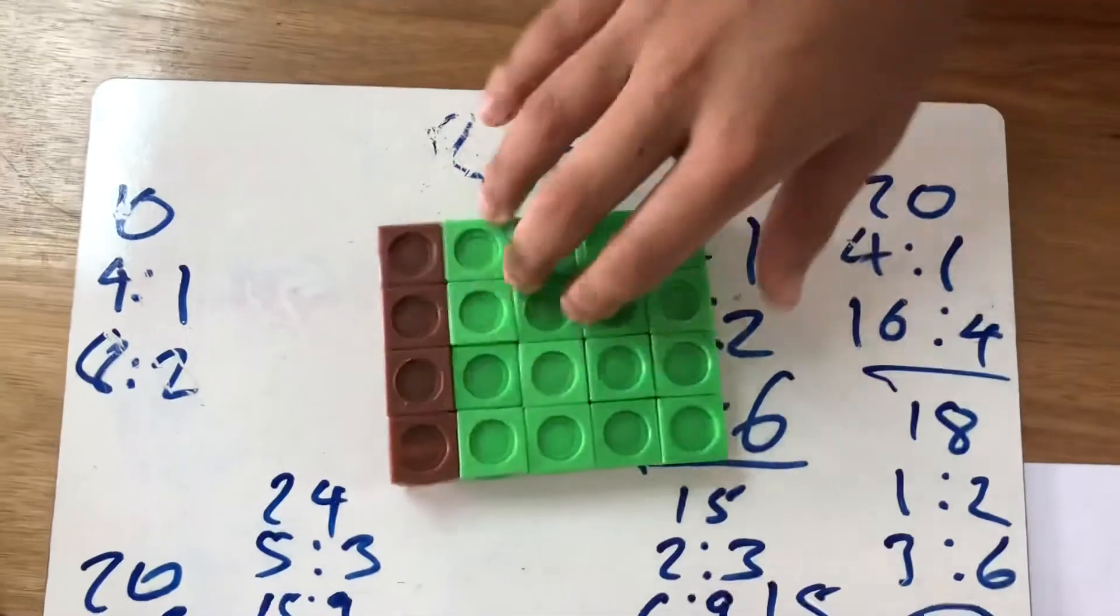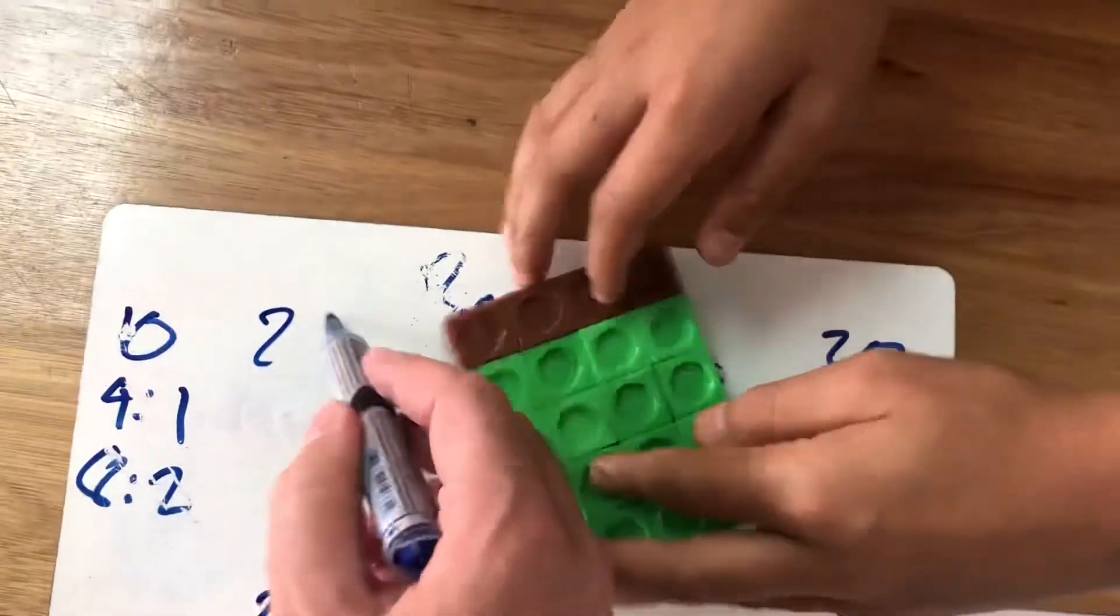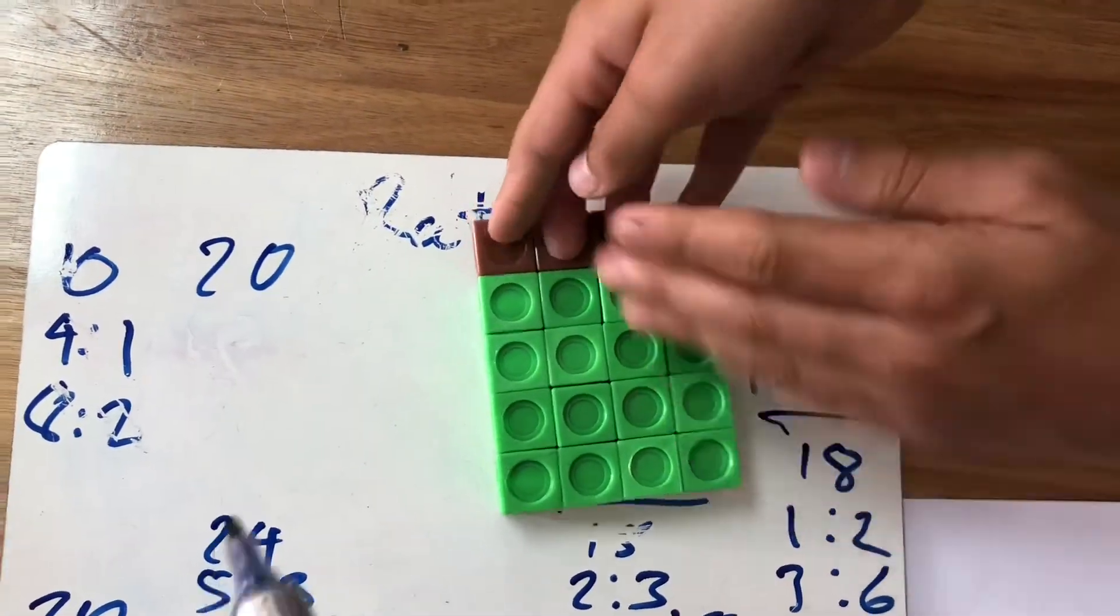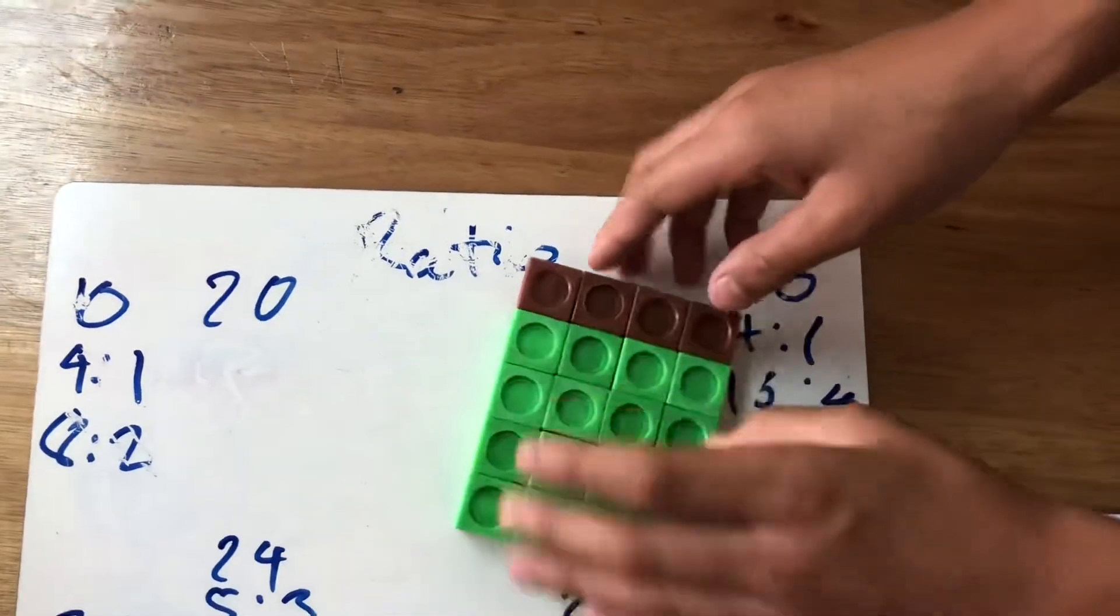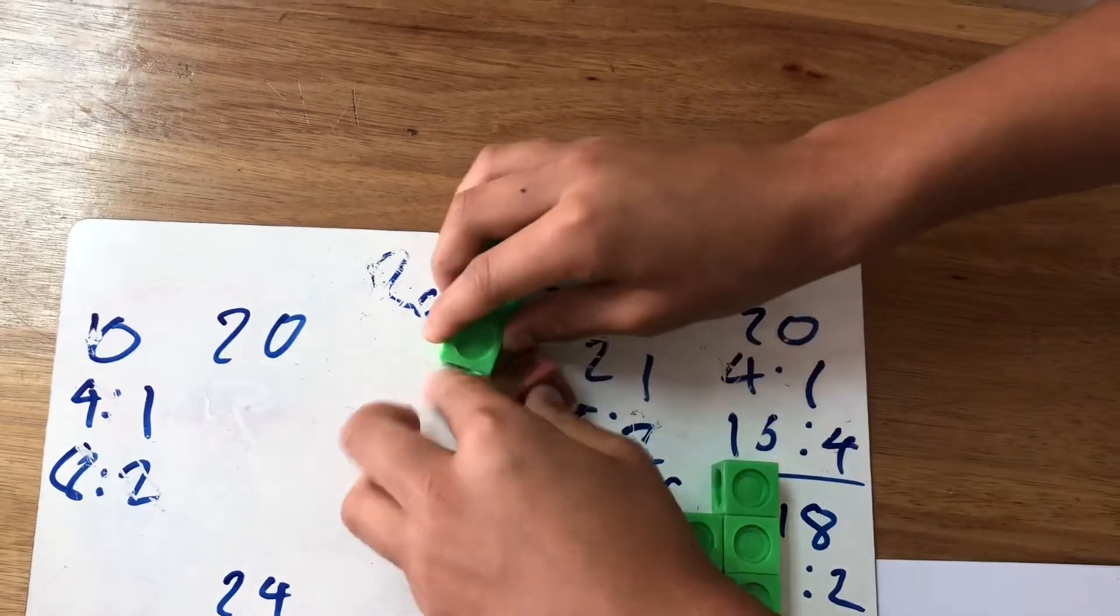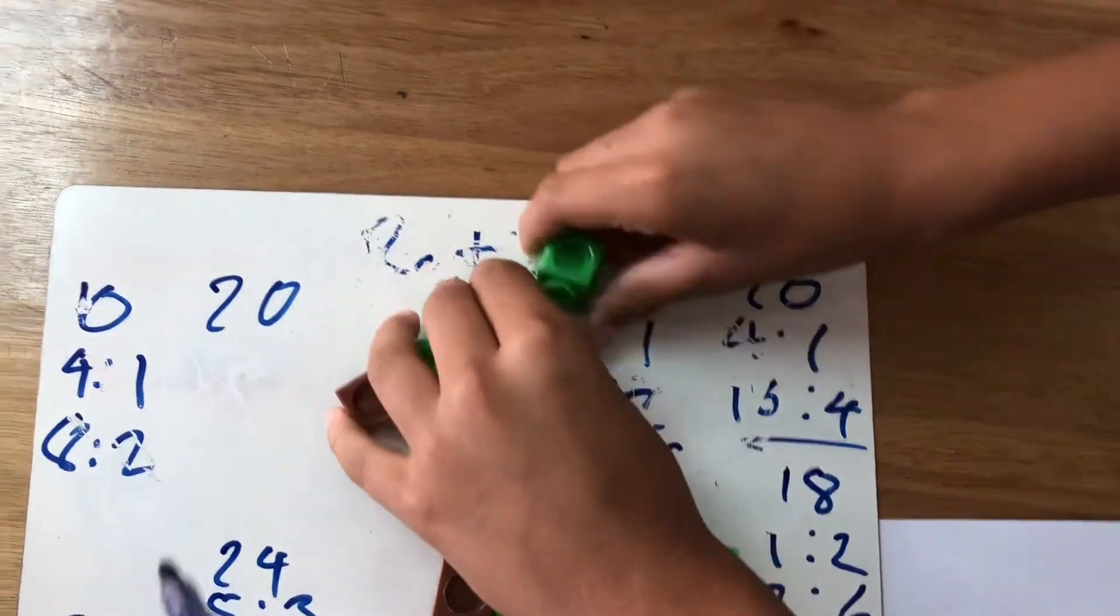One more. So here I have a total of 20 blocks. So this is an apple. So 4 of the blocks are rotten and the other 16 are still good.